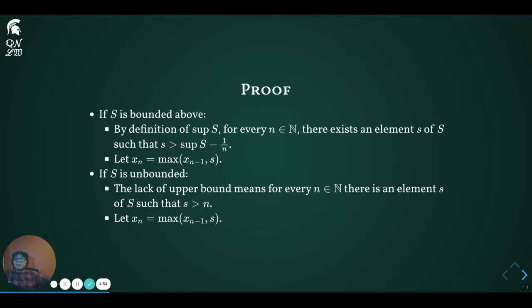Let's quickly construct maximizing sequences. In the case S is bounded above, we do so recursively. Start with x_1 an arbitrary element of S. From x_1, use that by definition of the supremum. For every n, there exists some element, small s, of S, such that s is greater than the supremum minus 1 over n. We set x_n to be the larger of x_(n-1) and the s we just built. Setting x_n to be larger than x_(n-1) guarantees that the sequence is increasing. Setting x larger than s guarantees that the sequence converges to the supremum.